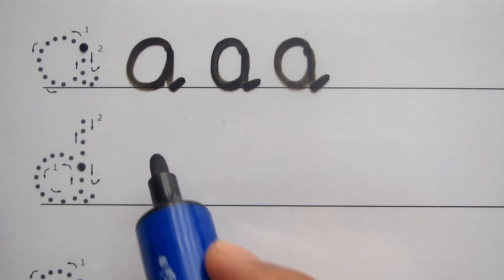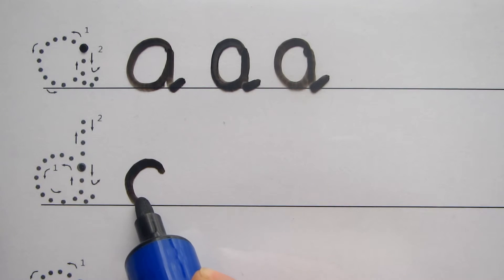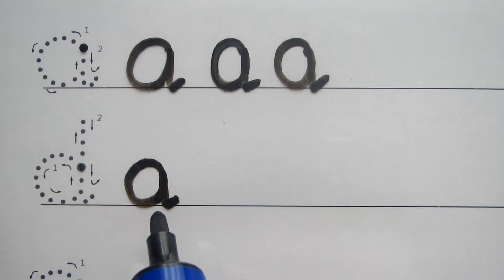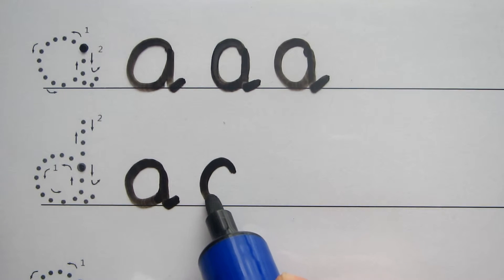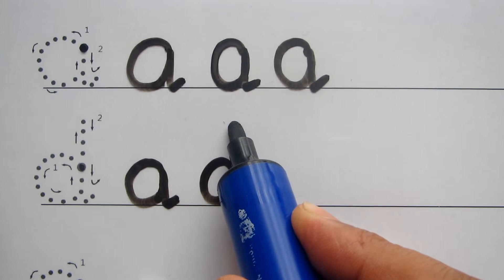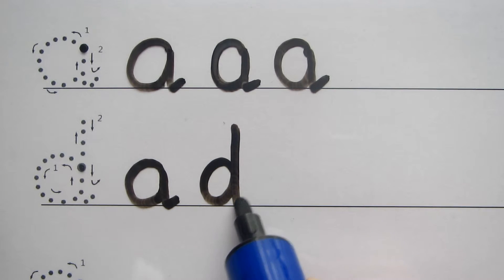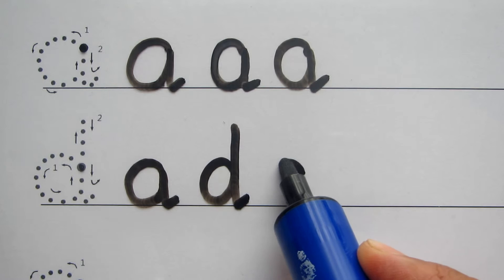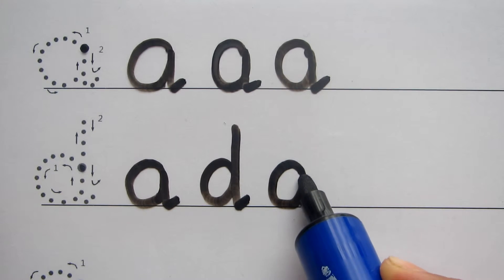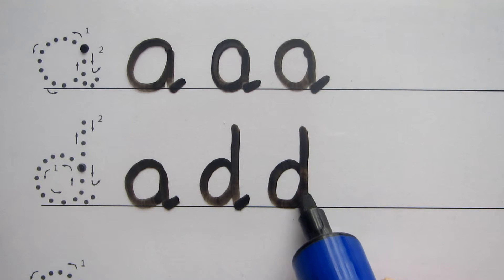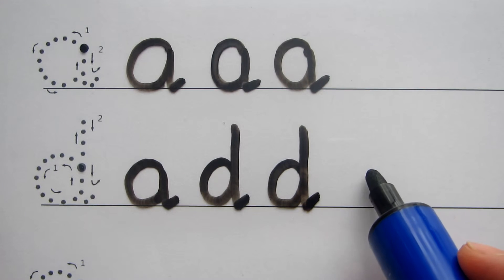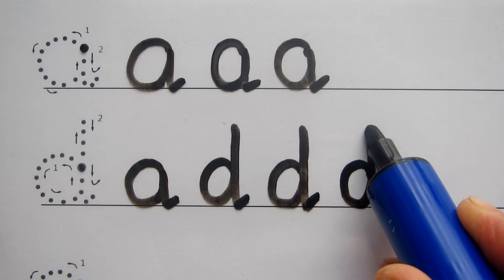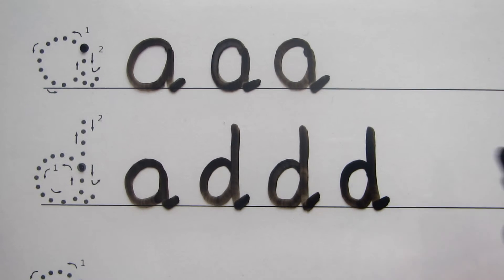The next letter is the letter D. You start there like the letter A — go up, around, to the line, back up to where you started. But this time, when you get back to the starting point, just keep going — straight up to the top, then straight down to the line, and a little flick. Do not take your pen off. That's the lowercase D.